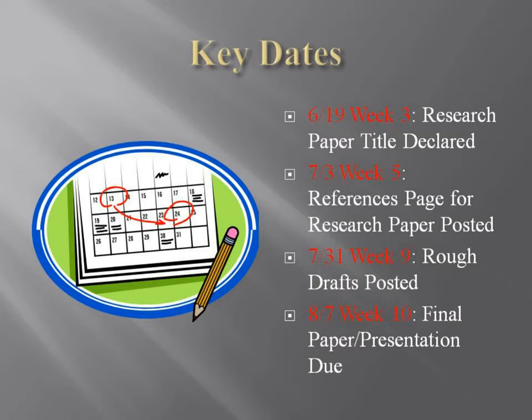A couple of key dates to look at. June 19th, week three, you're going to tell us the topic of your main research paper, which is due in the final week of class. July 3rd — I'm sorry we are meeting the day before the 4th of July, but that's the schedule — you'll need to post the reference pages for that research paper. Waiting until the last minute is never a good idea. Your reference page may still change between week five and week ten, but it'll give you a good start.